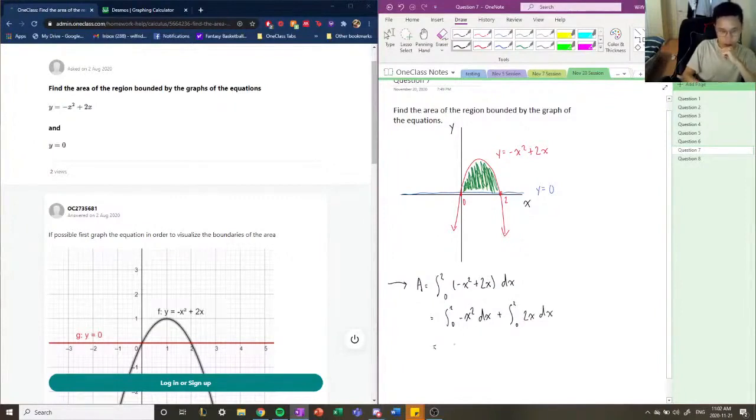We're going to use our power rule here, which gives us negative 1 over 3 x cubed from 0 to 2, plus this is also the power rule, but since we have a 2 down here, it's very convenient for us. It's just x squared from 0 to 2.